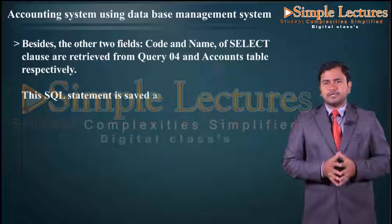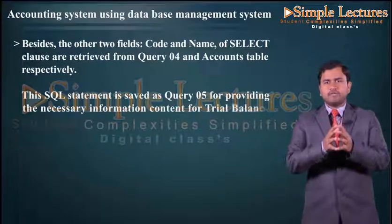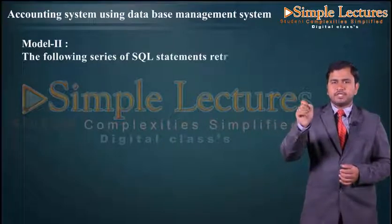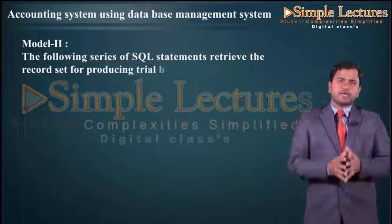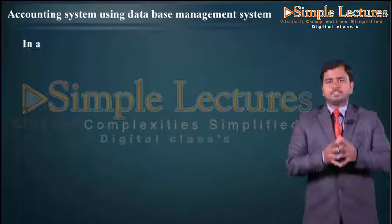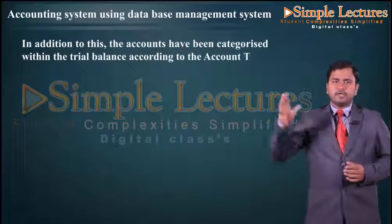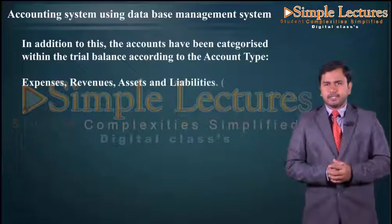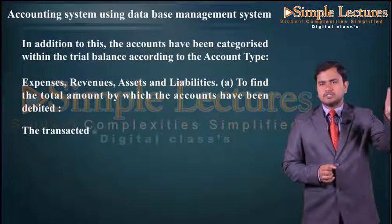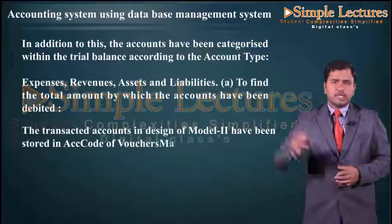This SQL statement is saved as Query 05, providing the necessary information content for the trial balance report. Moving on to Model 2, the following series of SQL statements retrieve the record set for producing a trial balance when the database design for Model 2 is used. In addition, accounts have been categorized within the trial balance according to account type: expenses, revenue, assets, and liabilities. In Model 2, transacted accounts are stored in the account code of voucher_main and code of voucher_details.